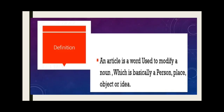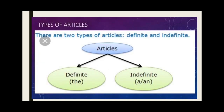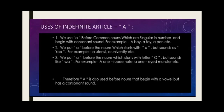First of all, the definition of an article is that it is a word used to modify a noun — basically a person, place, object, or idea. We have to put articles before the nouns of a sentence. We have two types of articles: one is the definite article and the other is the indefinite article. The definite article is 'the,' and the indefinite articles are 'a' and 'an.' Now we will discuss the uses of the indefinite article.